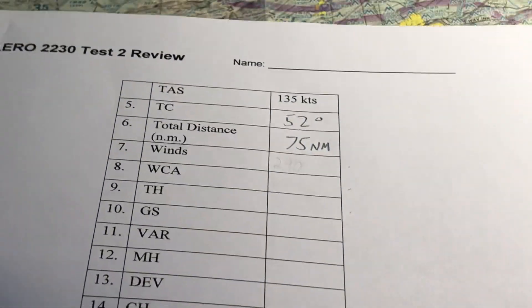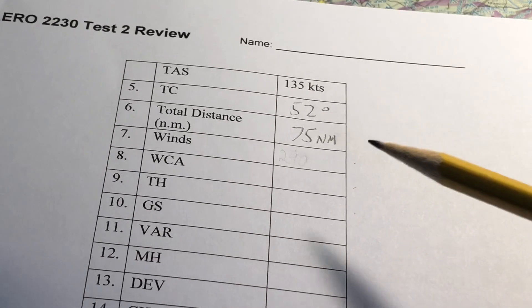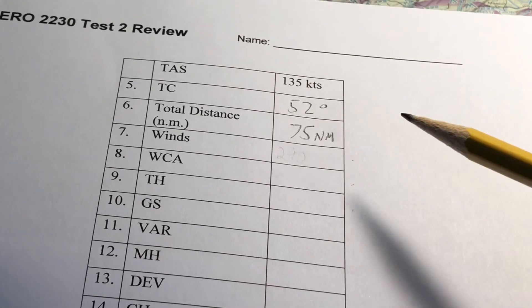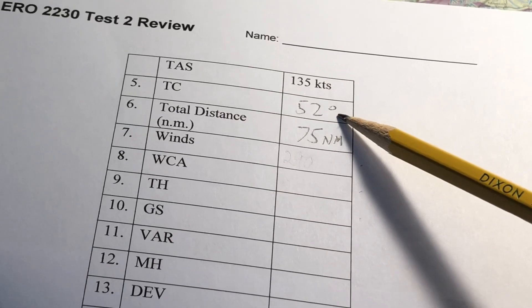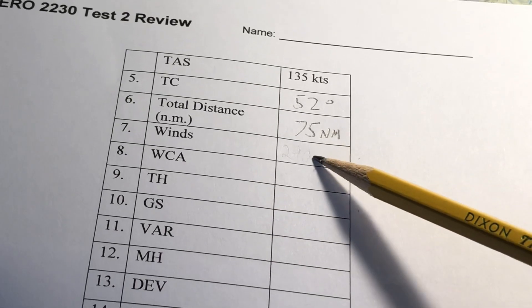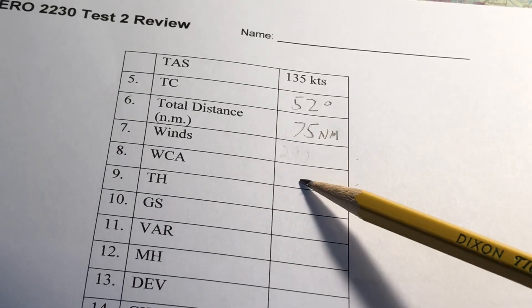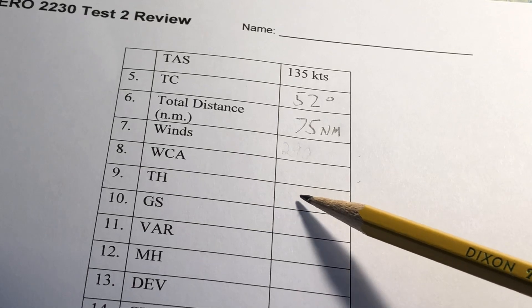In a previous video we plotted our course from Chattanooga to Knoxville. We determined that the true course was 52 degrees and the total distance was 75 nautical miles. Now we need to determine the winds, the wind correction angle, and calculate the true heading.